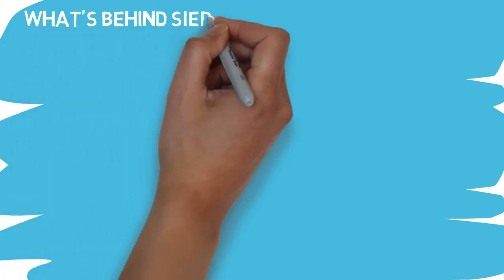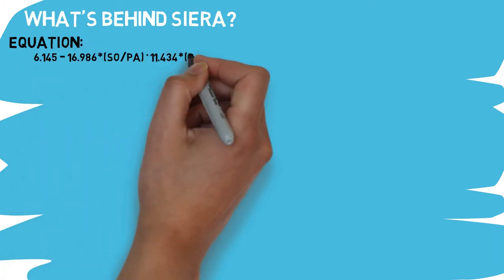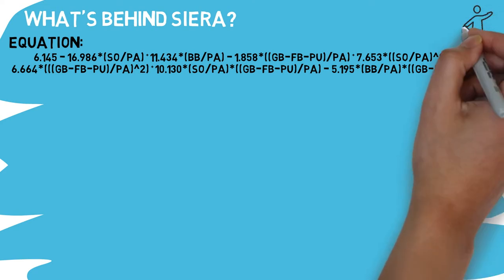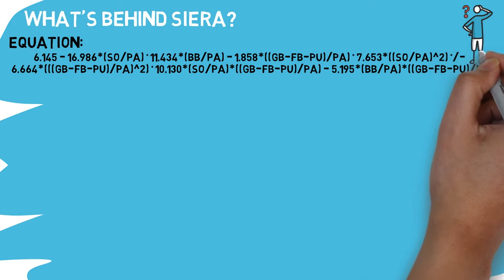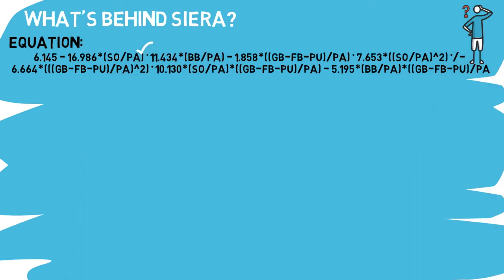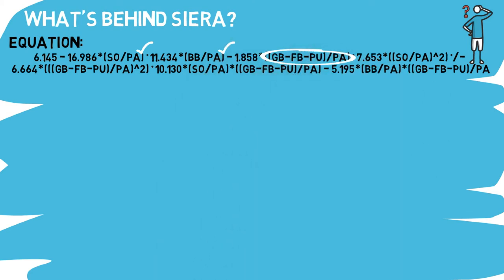Speaking of complicated, let's take a look at how you calculate Sierra. Here is the equation behind Sierra. Yeah, you're looking at that right. Now I recognize that this is intimidating, because it's definitely intimidating to me too, but that's how it can be so accurate. You'll recognize a few points in here, such as strikeouts and walks per plate appearance, but the kicker that makes this stat so valuable is that it takes into account ground balls, fly balls, and popups.